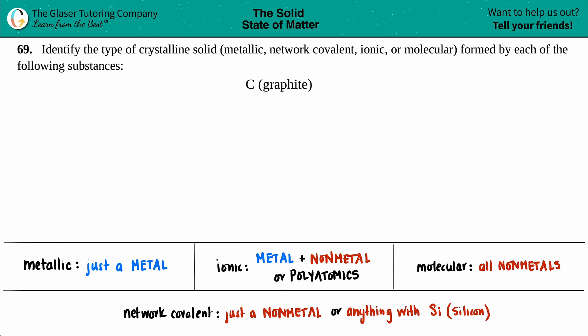Number 69: Identify the type of crystalline solid, whether it's metallic, network covalent, ionic, or molecular, formed by each of the following substances. We have carbon in the graphite form, which is basically what you use for pencils.